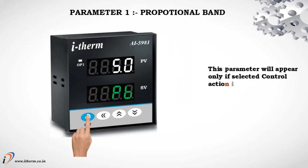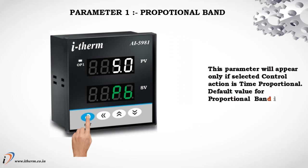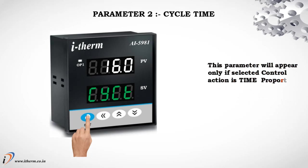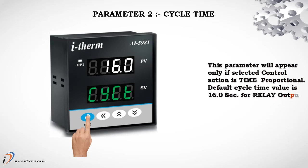Parameter 1: Proportional Band. This parameter will appear only if the selected control action is time proportional. Default value for proportional band is 5.0. Parameter 2: Cycle Time. This parameter will also appear only if the selected control action is time proportional. Default cycle time value is 16.0 seconds for relay output and 1.0 seconds for SSR output.